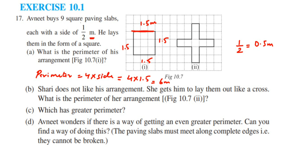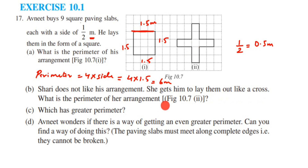The next question says: Shari does not like his arrangement. She gets him to lay them out like a cross — that's the second figure. What is the perimeter of her arrangement? So we have to find the perimeter of the second image.